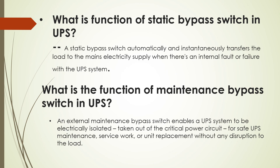What is the function of the static bypass switch in UPS? A static bypass switch automatically and instantly transfers the load to the main electricity supply when there is an internal fault or failure with the UPS system. What is the function of the maintenance bypass switch in UPS? An external maintenance bypass switch enables a UPS system to be electrically isolated and taken out for maintenance, for safe service work or unit replacement without any disruption to the load.